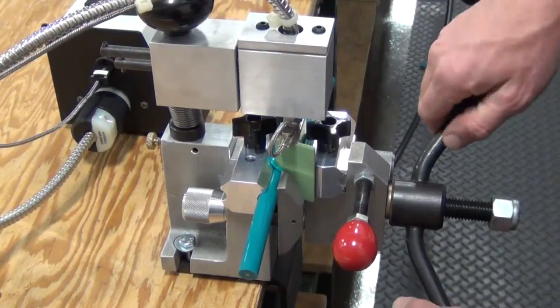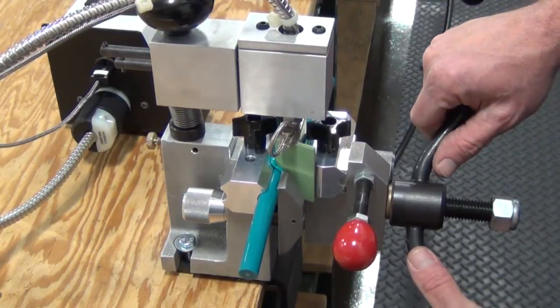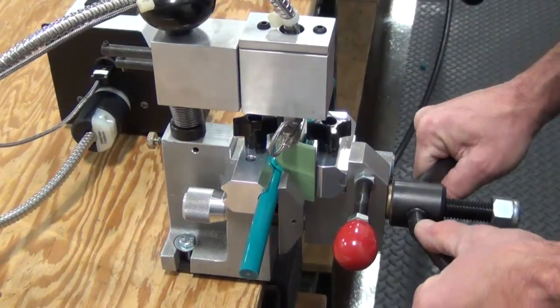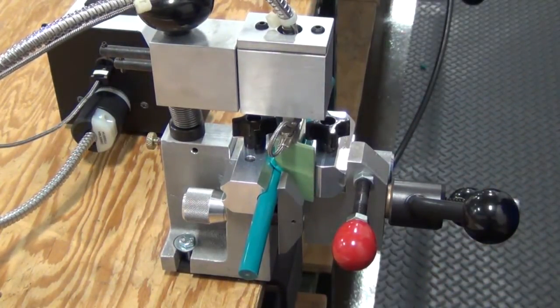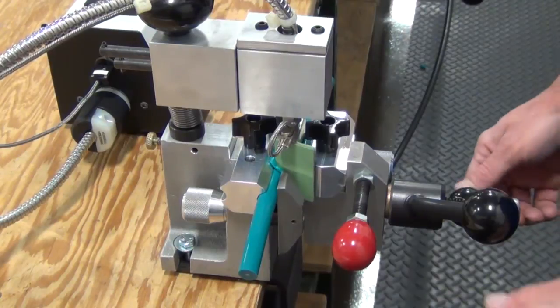Continue turning large wing nut until it stops. Do not over tighten. Important: this next sequence must be done very quickly.